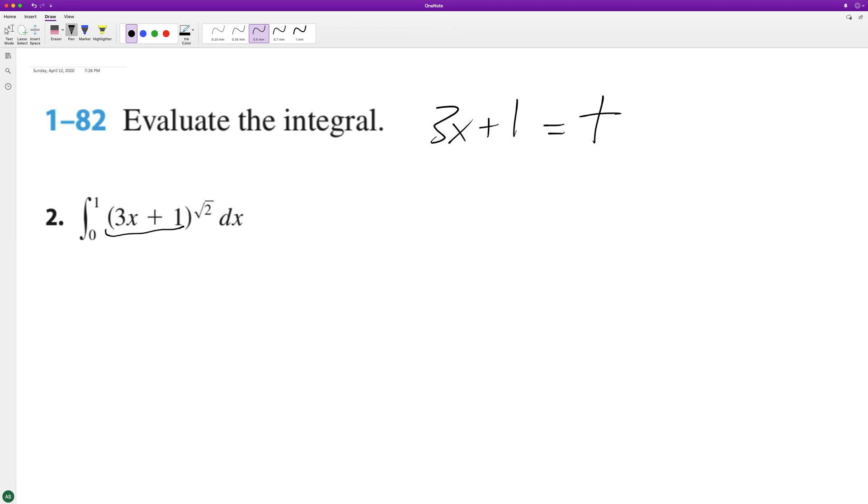Take the derivative of both of these. The reason we do that is to use our substitution for dx. So this ends up becoming 3dx equals dt. To get dx by itself, we multiply by one-third, so dx equals one-third dt.